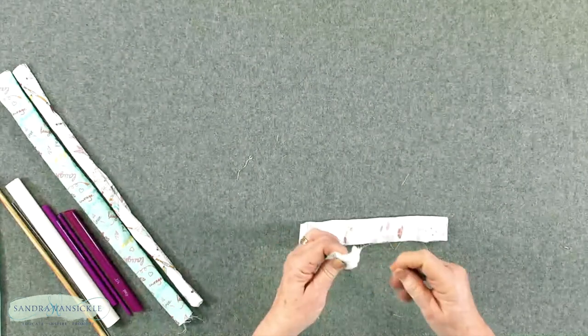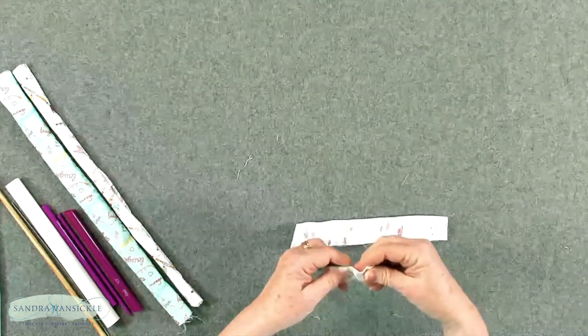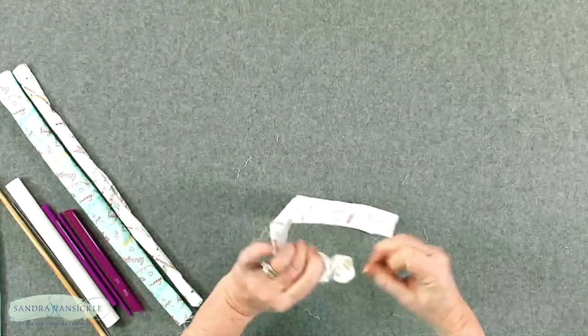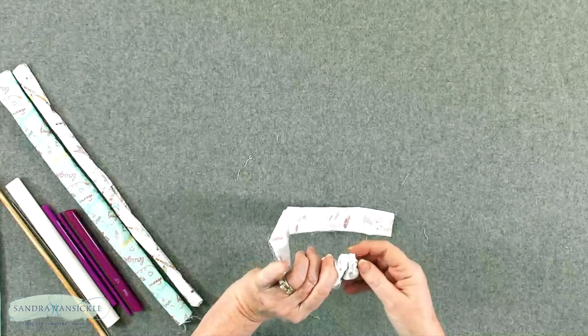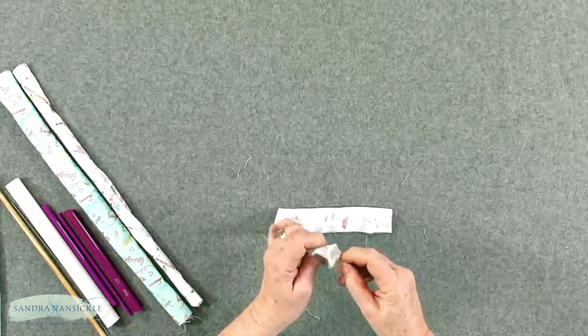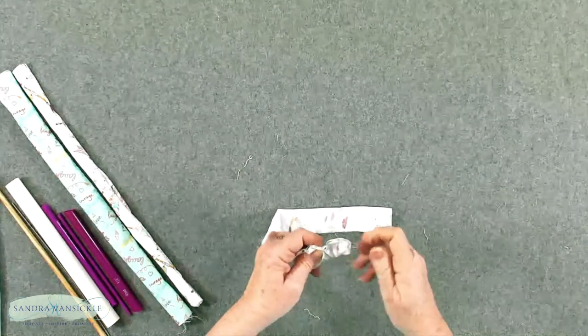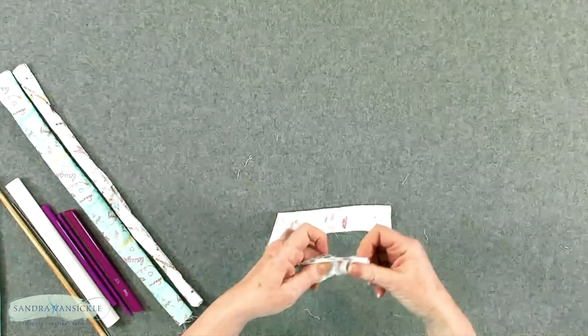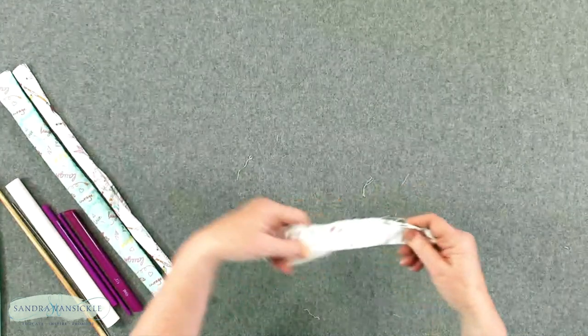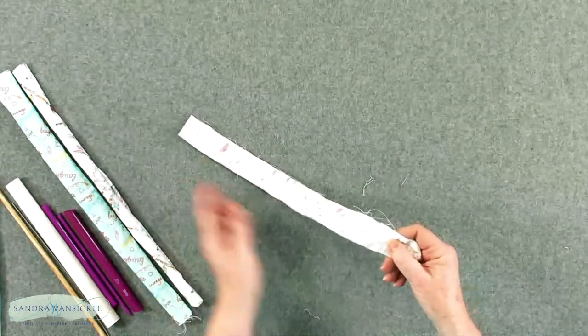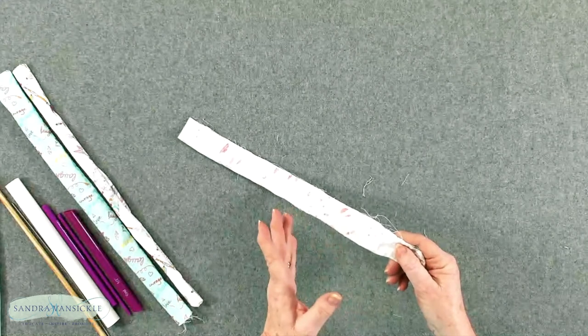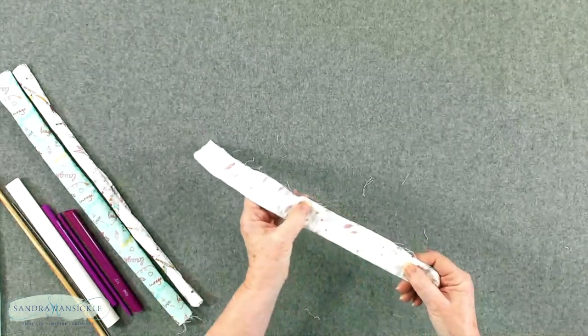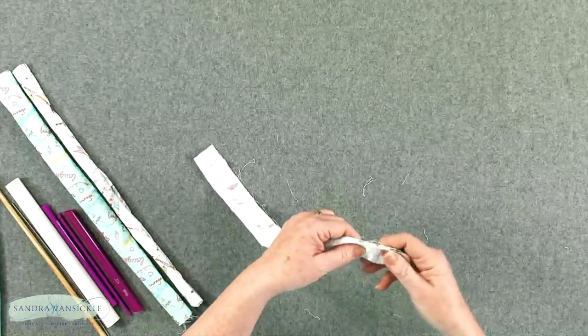Then you just have to push the pin down in and then start to push the fabric back over it. Now this could be the most challenging part to get it started, but once you do it's great. Now this tube happens to be a little bit larger, but if you're trying to turn a smaller tie, you probably want to go along where your seam is and just trim it down a little bit, but make sure you don't trim through the stitching.